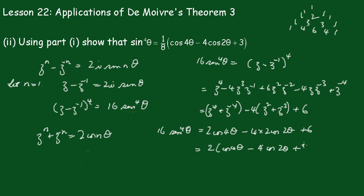And divide both sides by 16, then we get sin^4 θ is equal to 1/8 times (cos 4θ minus 4 cos 2θ plus 3), which is the required result.